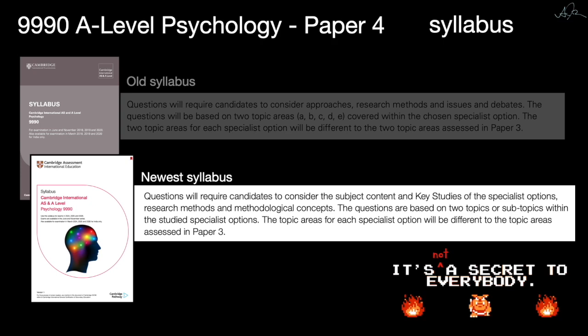Take a moment and think about what was given on Paper 3. I felt personally disappointed in Paper 3 because there were no key studies for the two electives our students had done — a lot of invested time that didn't yield much in terms of extrinsic results. The syllabus states verbatim: the topic areas for each specialist option will be different from the topic areas assessed in Paper 3. So prioritize the things you were not asked about — it's not cheating, it's directly in the Cambridge syllabus.